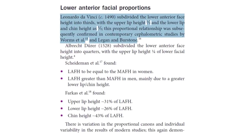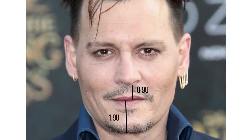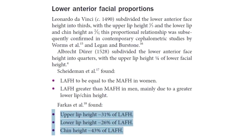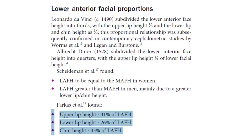Leonardo da Vinci first noticed this in his artworks, where he proposed that the one-third to two-third ratio is ideal for the lower third subdivisions. Furthermore, if you take the length of these subdivisions, the upper lip, lower lip and chin come to 31, 27 and 41% respectively. This is almost exactly the proposed ideals found by Farkas et al. in his later cephalometric studies.